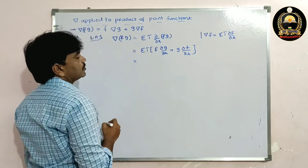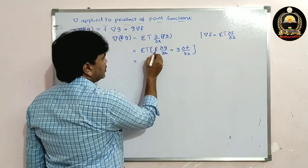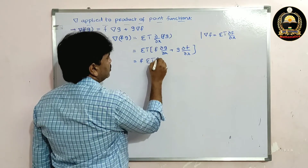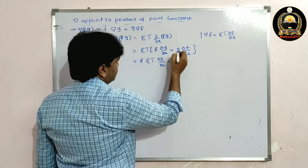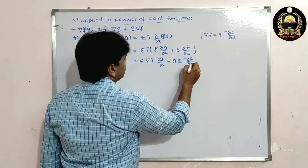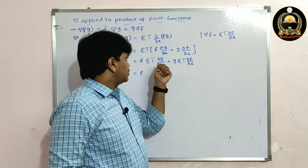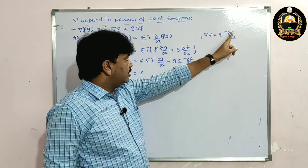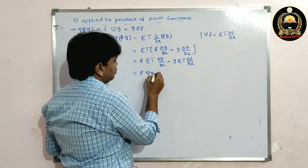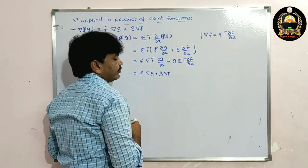Now apply sigma(i-bar) on both terms. Since f is a scalar point function, we can write f·sigma(i-bar · ∂g/∂x), plus g is also a scalar point function, so g·sigma(i-bar · ∂f/∂x). This gives us f·del(g) + g·del(f).